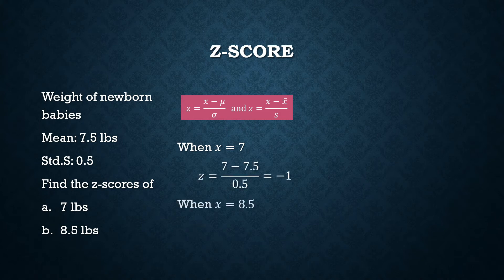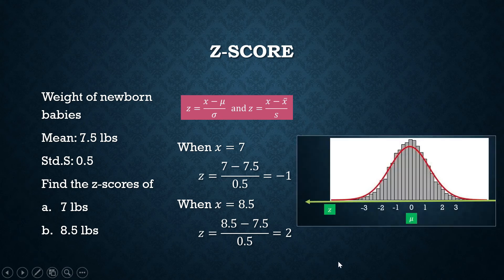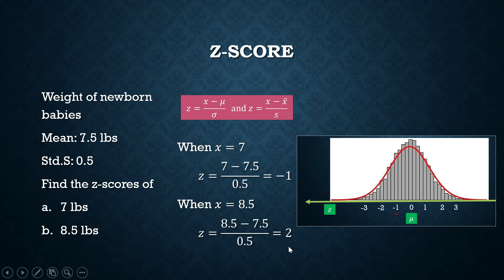For X equal to 8.5, its equivalent Z-score is 2. What does that mean? That means a baby whose weight is 7 pounds is one standard deviation below the mean. A baby born with a weight of 8.5 pounds has an equivalent Z-score of 2, meaning it is two standard deviations from the mean.